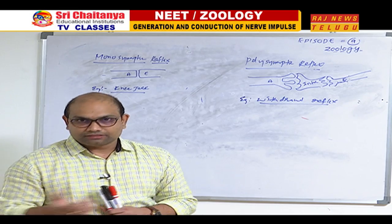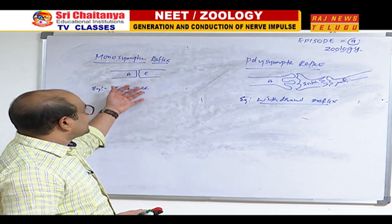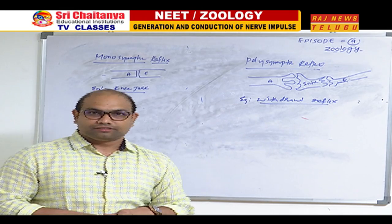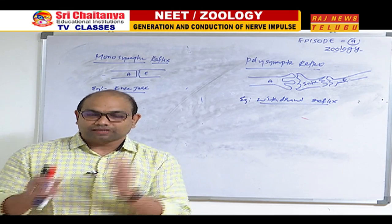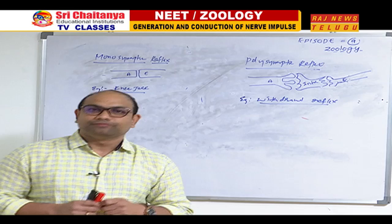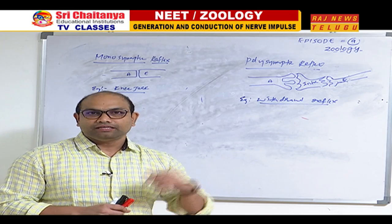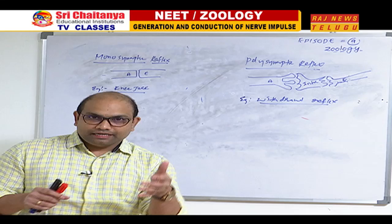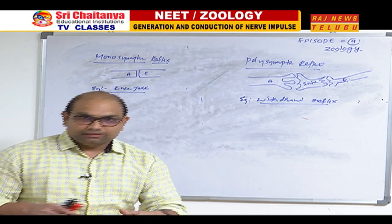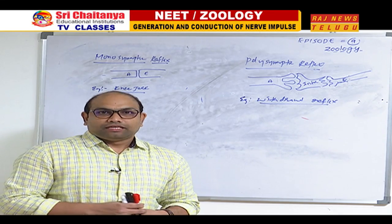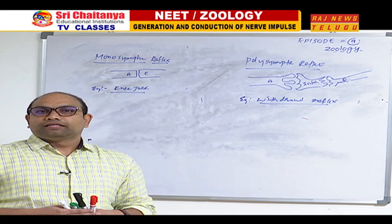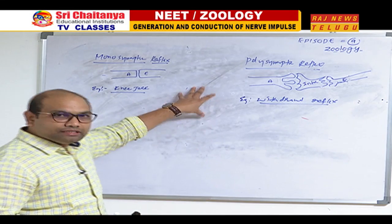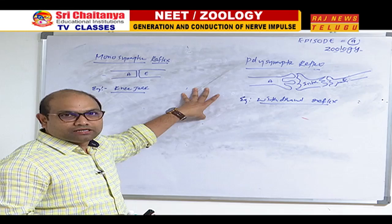To summarize: reflex arc and reflex action classification includes cranial reflex, spinal reflex, monosynaptic reflex, polysynaptic reflex, conditioned reflex, and unconditioned reflex. The parts of a reflex arc are: receptor (muscle spindle), afferent nerve, interneuron, efferent nerve, and effectors, which may be muscle or gland. With this, I conclude the reflex arc and reflex action topic.